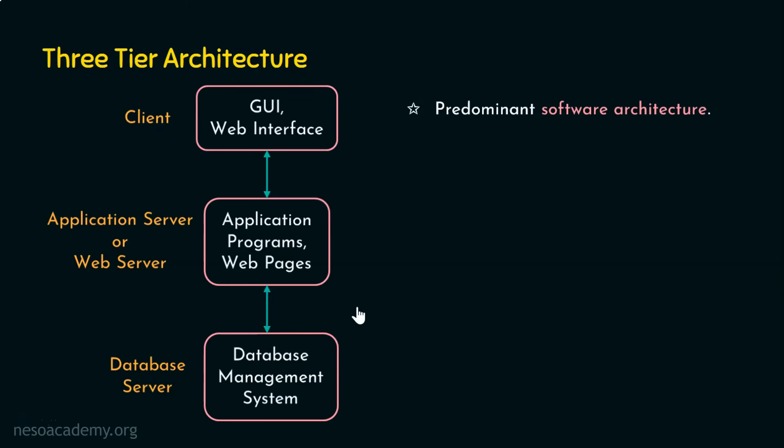The traditional client-server architecture involves two tiers, client and server. But when we talk about databases, web pages, and remote access, we certainly need three tiers. The three-tier software architecture is the predominant software architecture for client-server applications. For example, to do a fund transfer, I can open the internet banking page on my browser or use the banking app on my mobile.